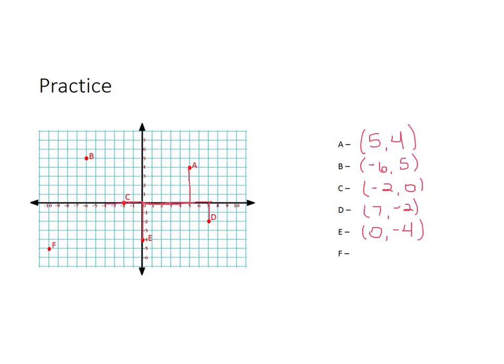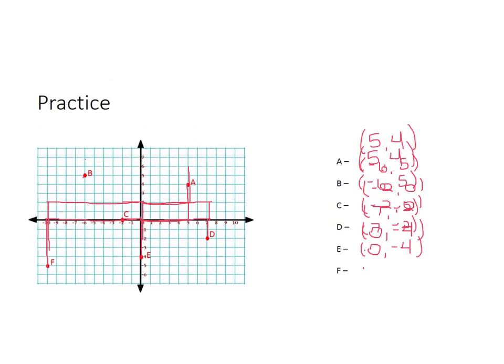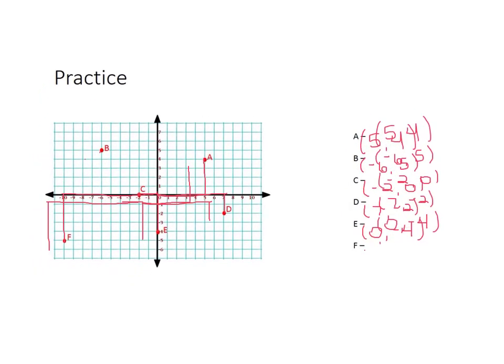F would go all the way over to negative 10, and then down negative 5. So we went over negative 10, and down negative 5. So let's write that as (-10, -5).